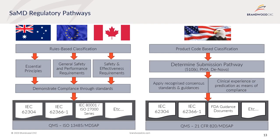The US approach is somewhat different in that the classification is based on product codes contained in FDA's product code catalogue. The classification will then determine the submission pathway — either a pre-market notification (510k), pre-market approval (PMA), or de novo if a product code does not exist. The means of compliance is usually by using clinical experience, evidence, trials, and demonstrating substantial equivalence through predication. FDA also recognizes consensus standards which may be used to demonstrate compliance. For all jurisdictions, the manufacturer is expected to establish a quality management system based on ISO 13485 or MDSAP in the GHTF countries, and 21 CFR 820 or MDSAP in the US.